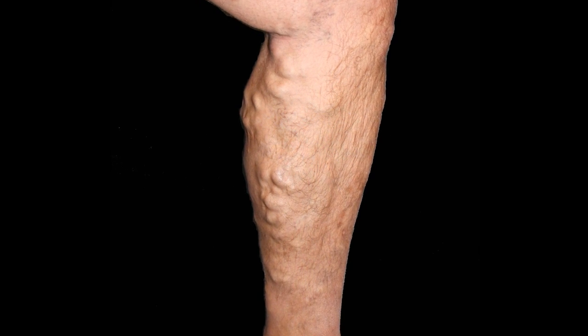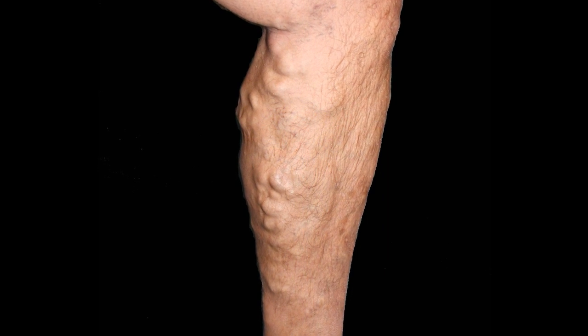Varicose veins are the unsightly and sometimes painful bulging vessels usually found in the lower extremities. To understand the cause of varicose veins, we first need to look at the structure of the vessels in our bodies.